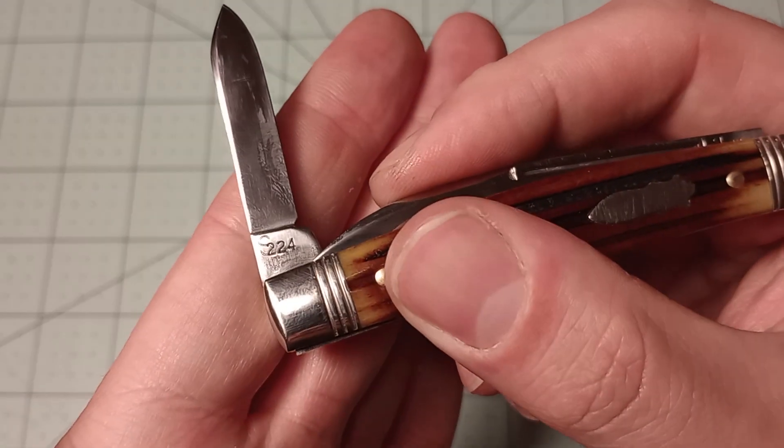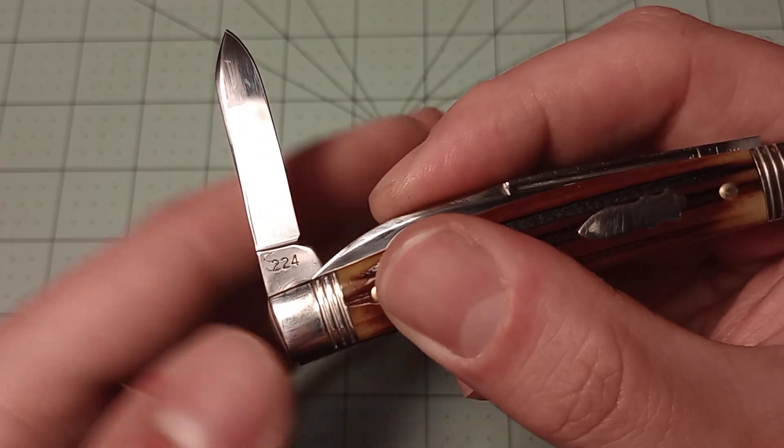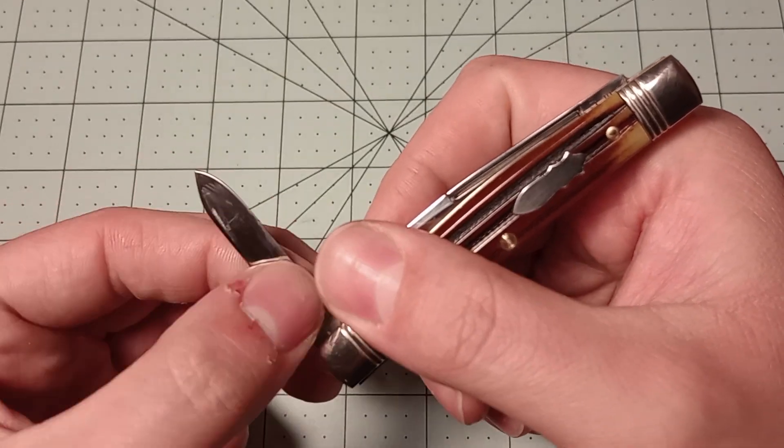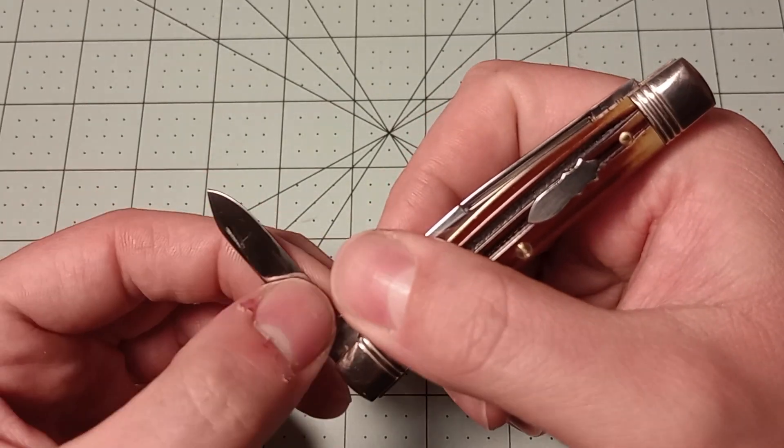And then there you can see the S stamped on the tang there. So that they know that it was an S knife. A store knife. Or, I think they're typically referred to as store knives.